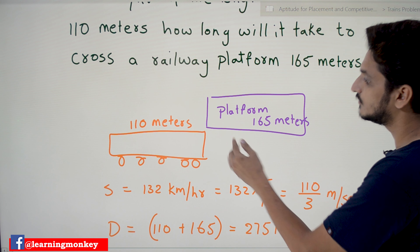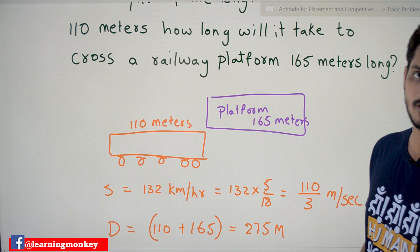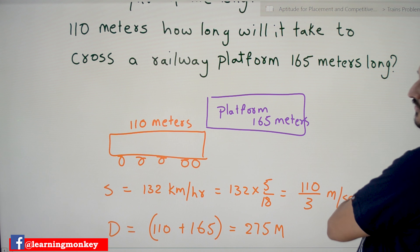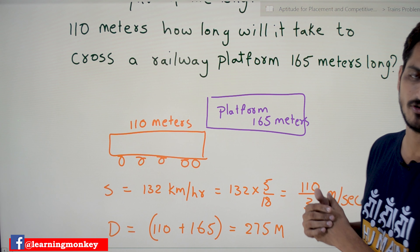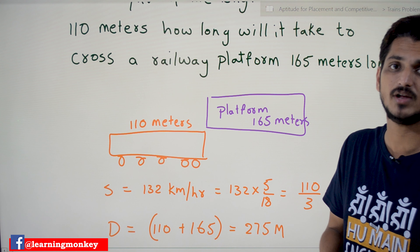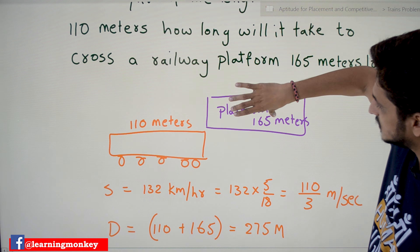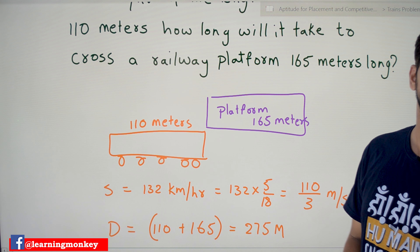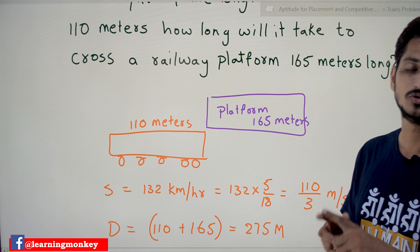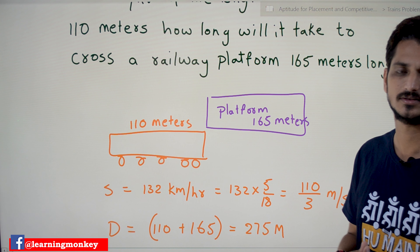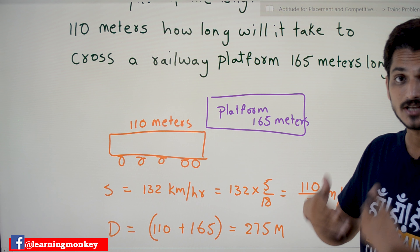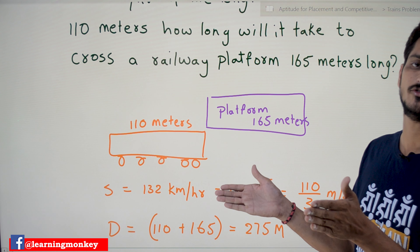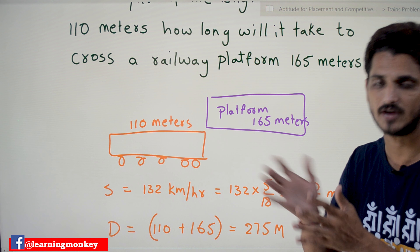If the train has to cross this railway platform, it has to pass this platform and get away from the platform. So how much distance does it have to travel? It has to travel the distance of the platform plus the distance of the train — the summation of these two we call the distance. That much distance it has to travel; only then will it cross the platform.